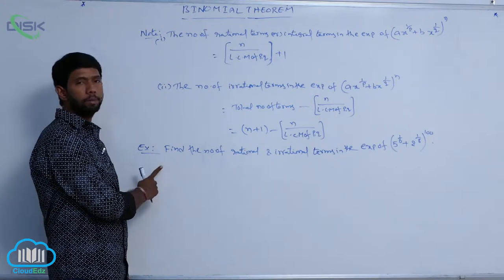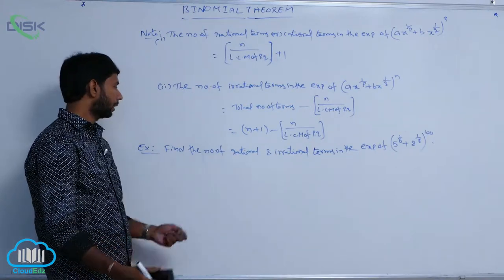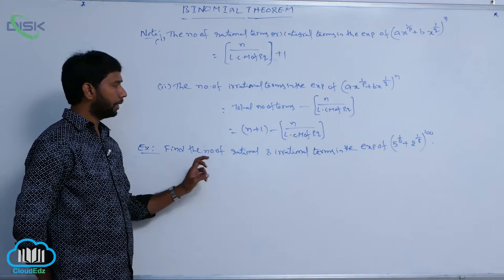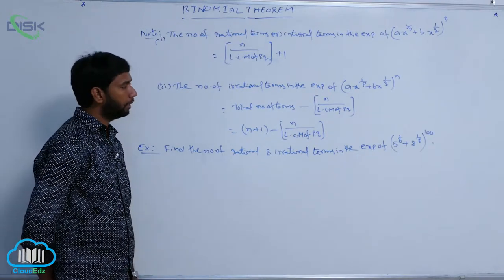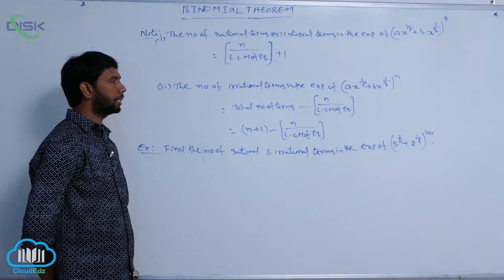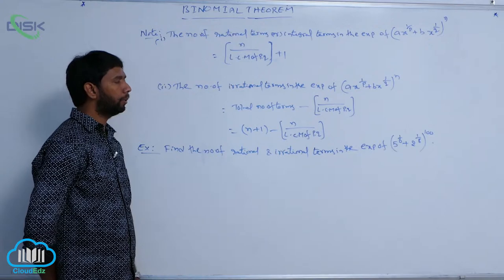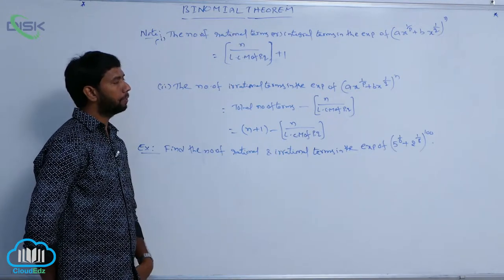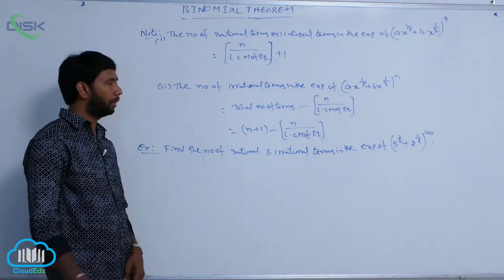Example problem on rational terms, integral terms, and irrational terms. Find the number of rational and irrational terms in the expansion of (5^(1/6) + 2^(1/8))^100.